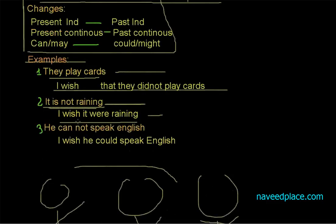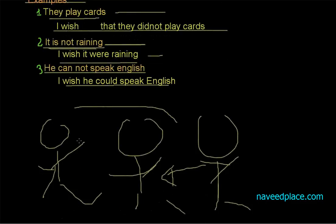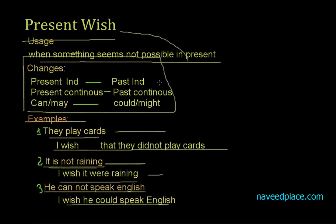Don't focus on how I am making these examples; just give consideration to what I am saying. The third example is: 'He cannot speak English. I wish he could speak English.' For example, your friend named Ali cannot speak English — that is the reality — but your wish is that he could speak English. So whatever the reality is, whenever we want the opposite of that reality in the present, we use present wish.